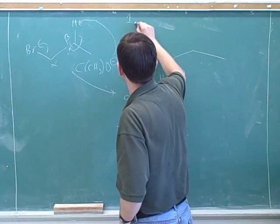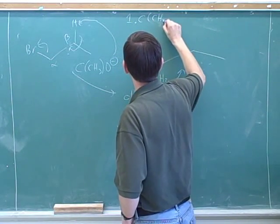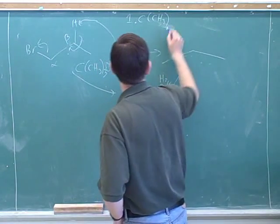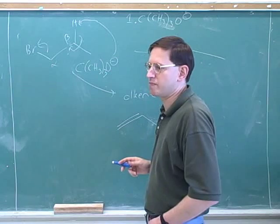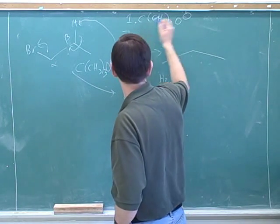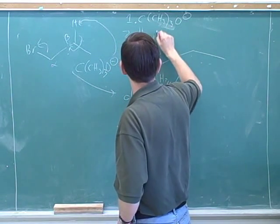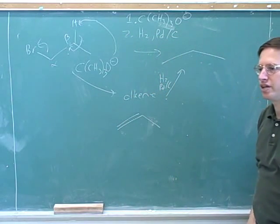And so the steps would be—I forgot to put the three in here. First, tert-butyl oxide, a strong bulky base to make sure we get E2. All right, and then hydrogenation.